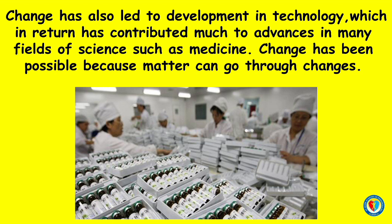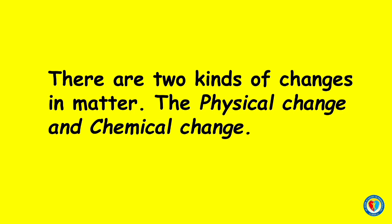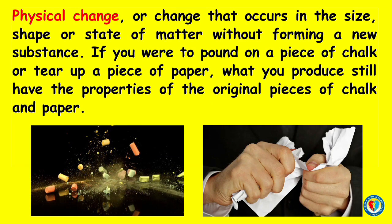Change has been possible because matter can go through changes. There are two kinds of changes in matter: the physical change and chemical change. Physical change is a change that occurs in the size, shape, or state of matter without forming a new substance. If you were to pound on a piece of chalk or tear up a piece of paper, the pieces produced still have the properties of the original pieces of chalk and paper.